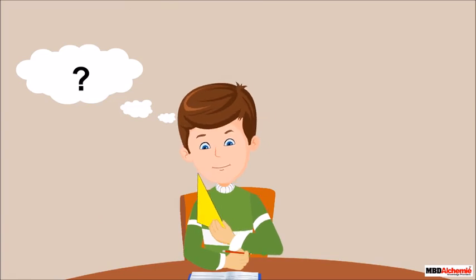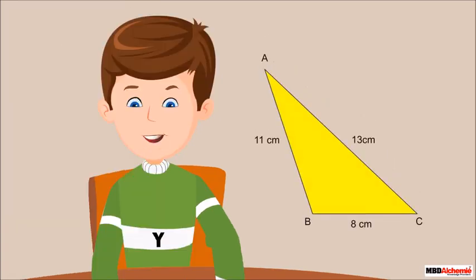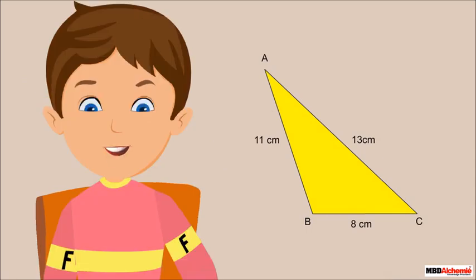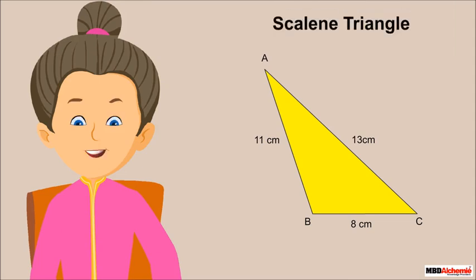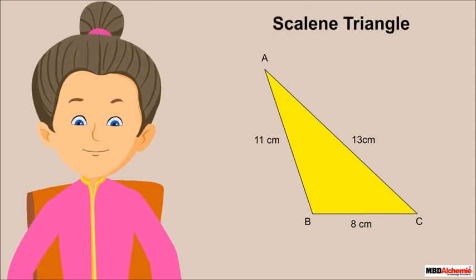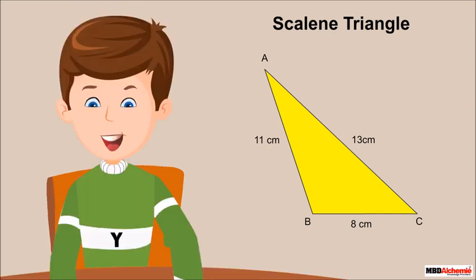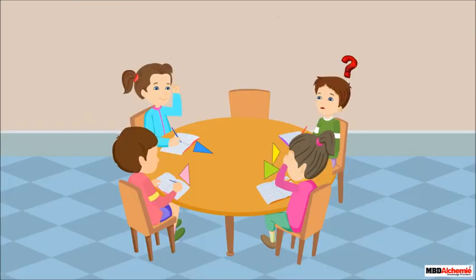Neil is confused about how to find the area of his triangle. He and his friends determine it is not a right triangle, not an equilateral triangle, and not an isosceles triangle. Sophie adds that it is a scalene triangle as all sides are different measures. Neil asks how they can find the area of a scalene triangle.